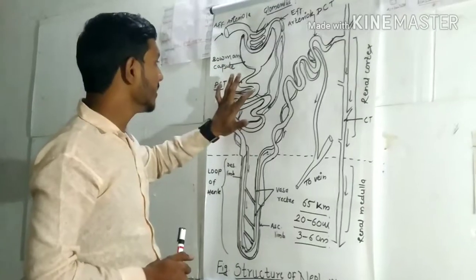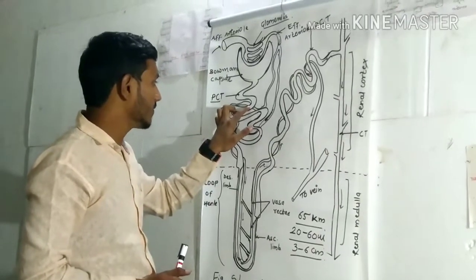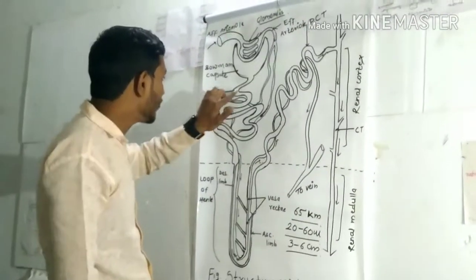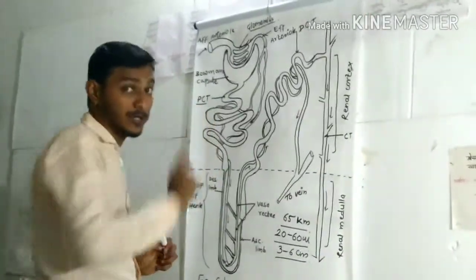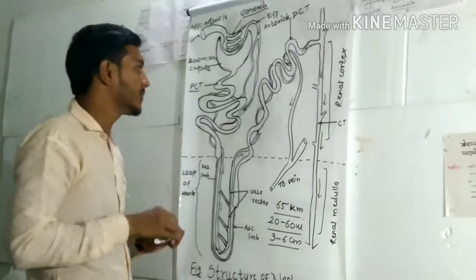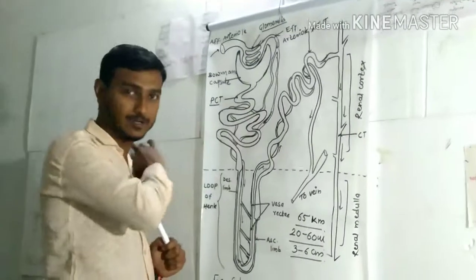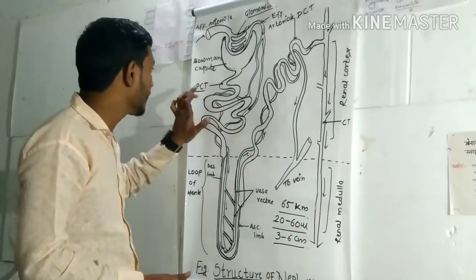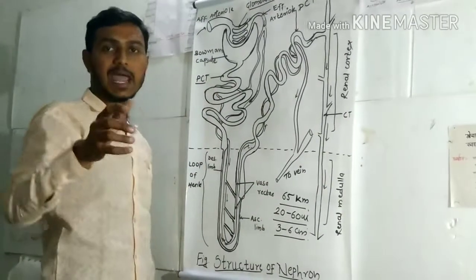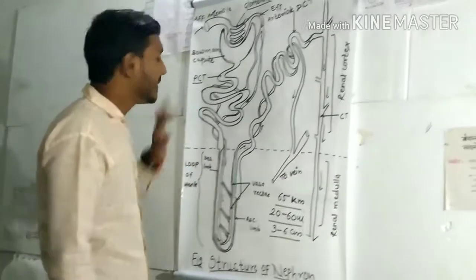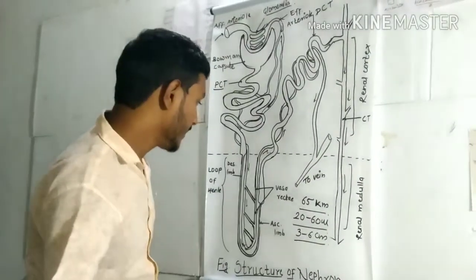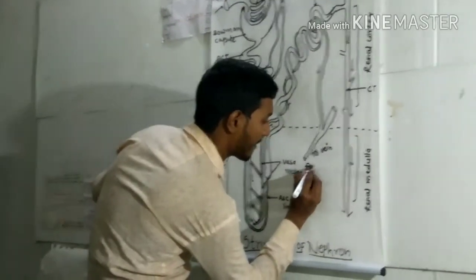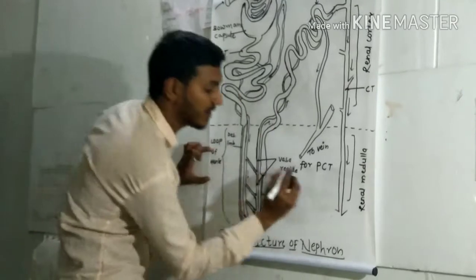The PCT is made up of numerous microvilli and ciliated cuboidal epithelium. These microvilli are necessary for absorption. The wall of the PCT is supplied with numerous mitochondria, which help in active absorption — active absorption requires ATP, and the ATP comes from the mitochondria. This ATP is used to actively absorb useful materials present in the PCT.